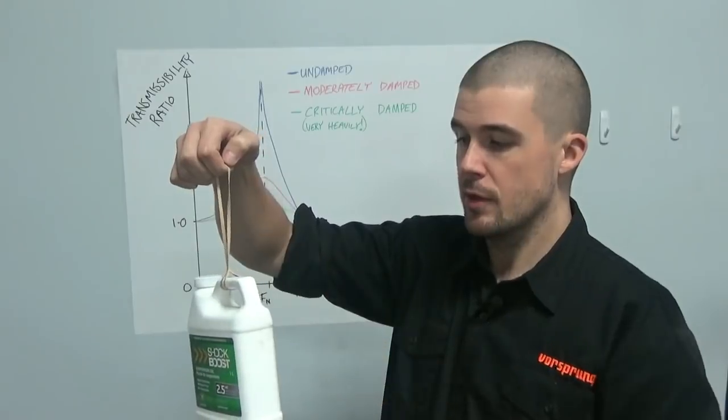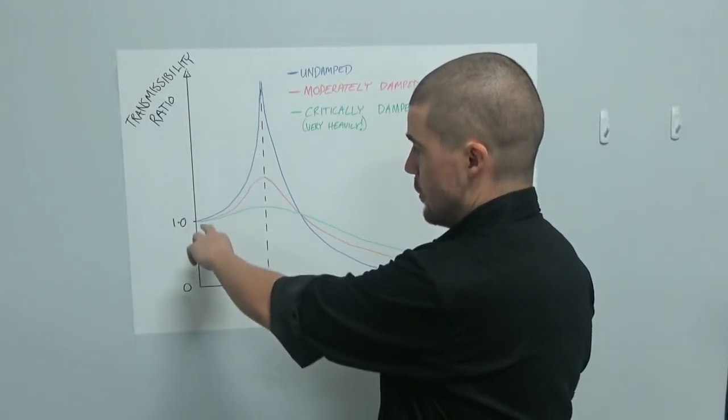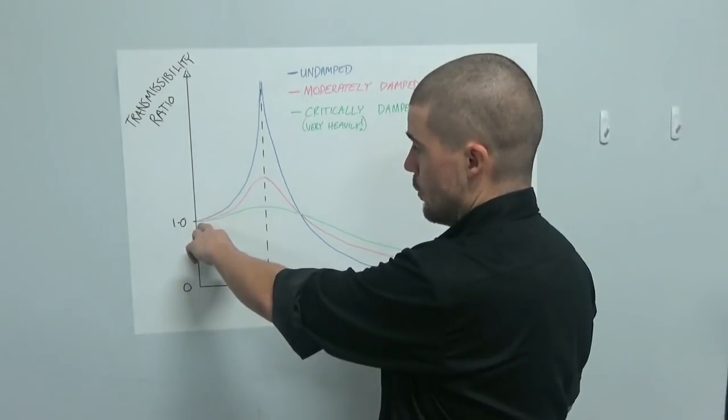So the input being my hand, the output being the sprung mass here. That means that we have transmissibility ratio of one. They both move in the same distance.